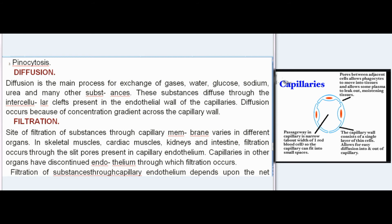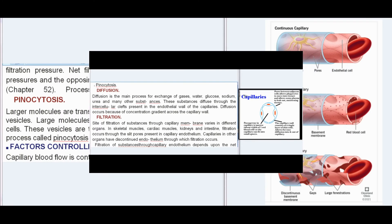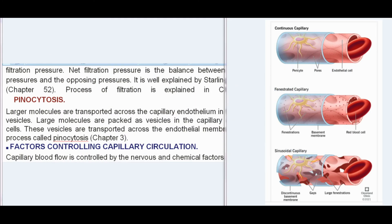Filtration: The site of filtration of substances through the capillary membrane varies in different organs. In skeletal muscles, cardiac muscles, kidneys, and intestine, filtration occurs through the slit pores present in the capillary endothelium. Capillaries in other organs have discontinuous endothelium through which filtration occurs. Filtration depends upon the net filtration pressure, which is the balance between driving pressures and opposing pressures, as well explained by Starling's hypothesis (Chapter 52). The process of filtration is explained in Chapter 27.